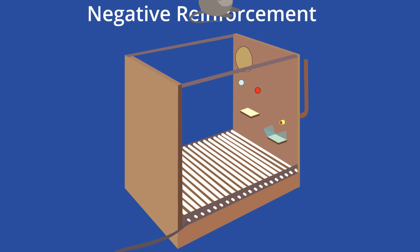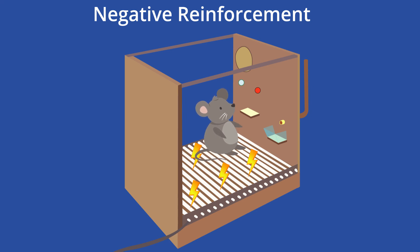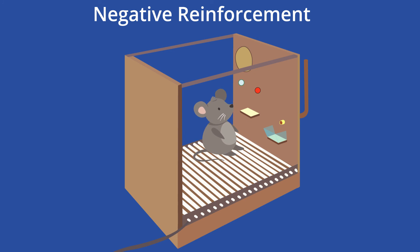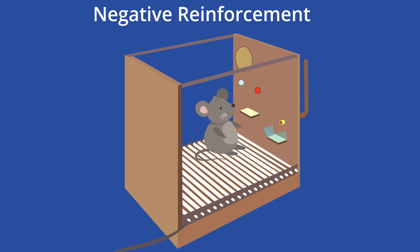In some other experiments, Skinner sent an electric current through the floors of the boxes that would cause discomfort to the animal as it scurried around, and the lever or button would be rigged to turn off the electricity. Skinner called this scenario negative reinforcement, in which something unpleasant is removed to encourage a certain behavior — in this case, also hitting the lever or button.